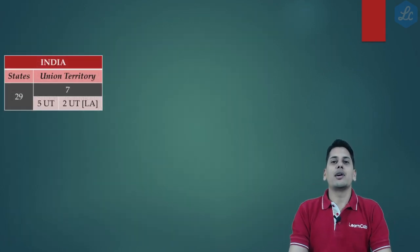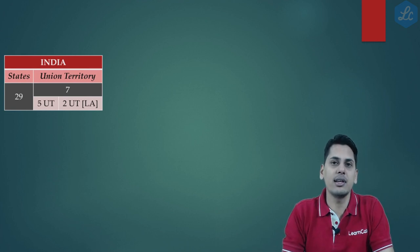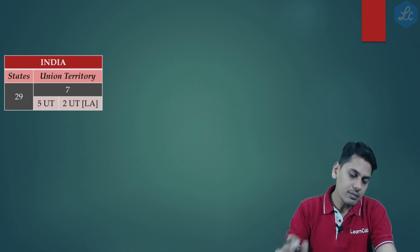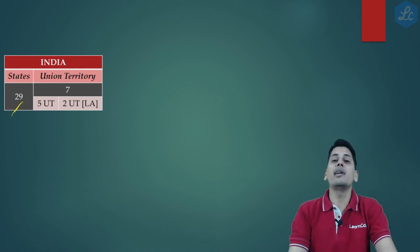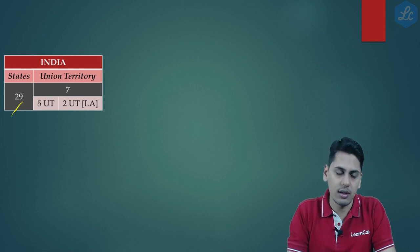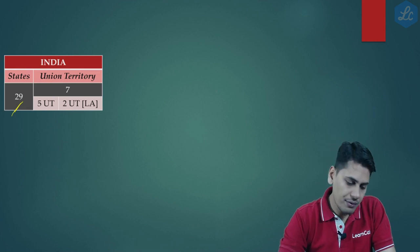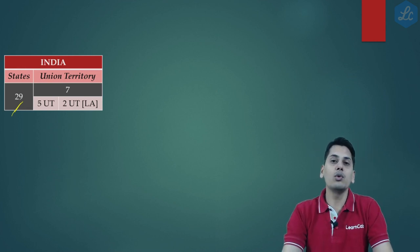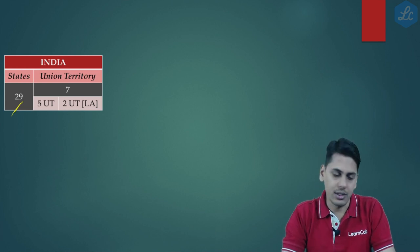The next amendment is because of the reorganization which happened between the states and union territories of India. Prior to reorganization, India comprised 29 states and 7 union territories. Out of these 7 union territories, 5 were without legislature and 2 — that is Delhi and Puducherry — were with legislature.